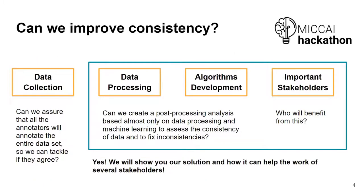So how can we improve consistency? We can improve consistency at two stages of the AI development pipeline. In the data collection stage, we could have different annotators make annotations for the same images and then assign the most consensual annotation to each image. We can also define more objective descriptions of characteristics like smoothness of the head. But in this work, we are more focused on the data processing stage, defining algorithms that quantify consistency and use it to improve consistency.